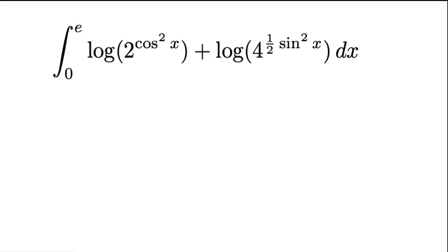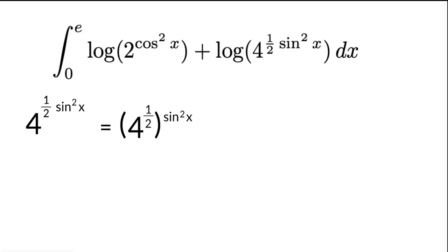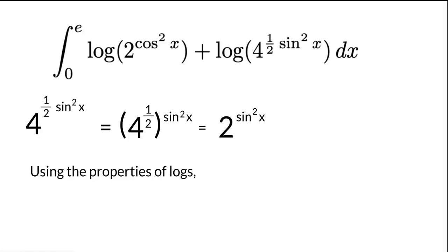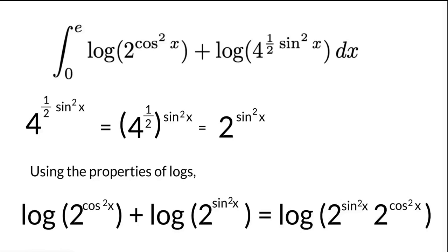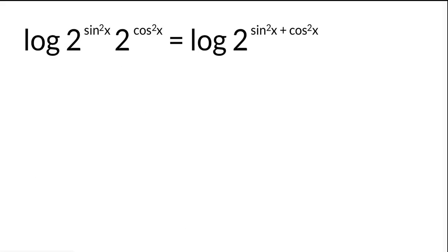Let's try and simplify the inside of the integral first. 4 to the power 1/2 times sin squared x is equal to 4 to the power 1/2 times sin squared x, which is equal to 2 to the power sin squared x. Using the properties of logs, we can add log of 2 to the power cos squared x plus the log of 2 to the power sin squared x, and this will be equal to the log of 2 to the power sin squared x times 2 to the power cos squared x.